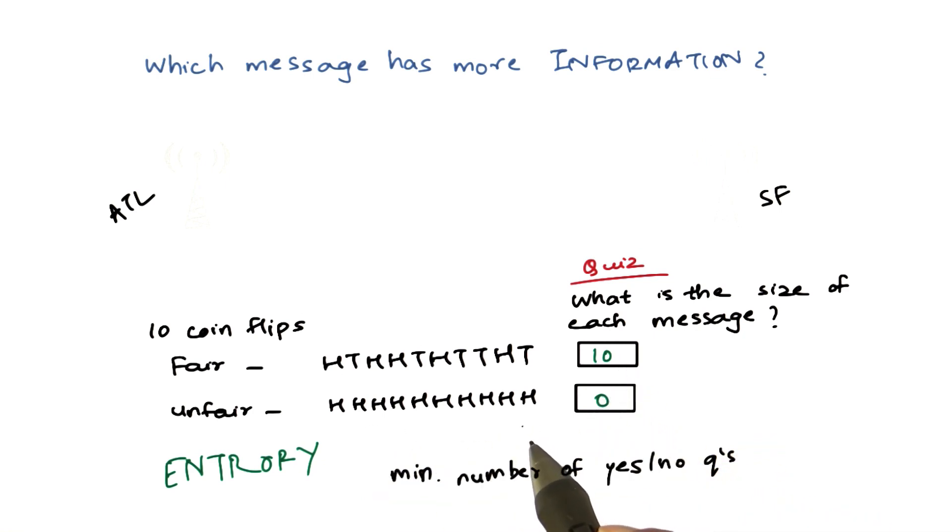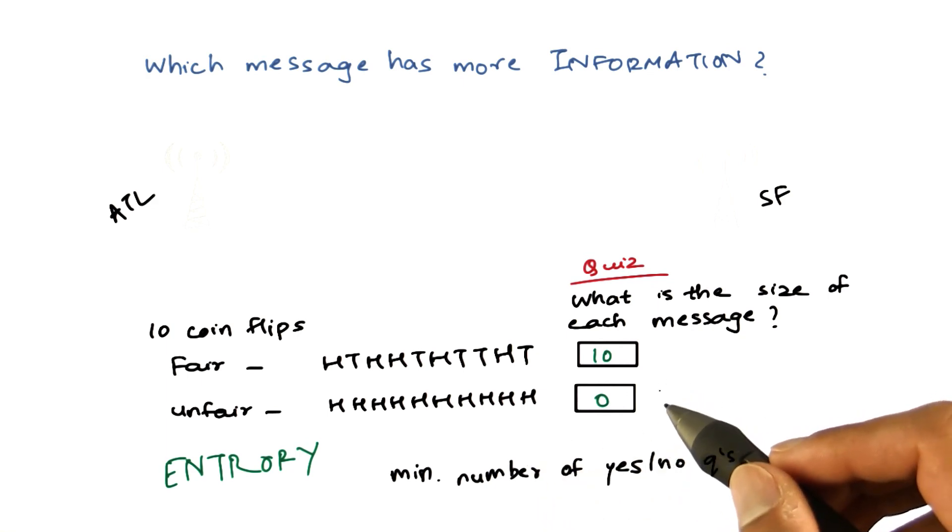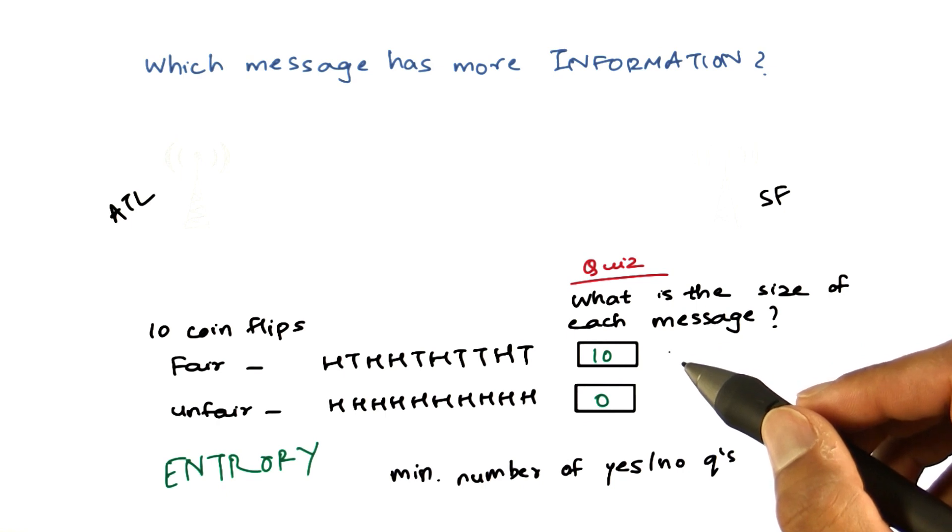In the unfair coin, you don't have to ask any questions. So the information in the second case is zero, while the information in the first case is one.